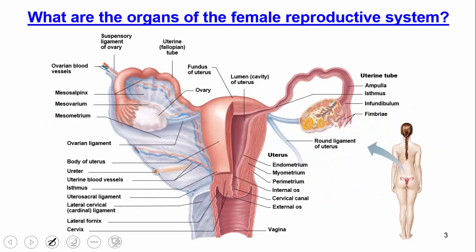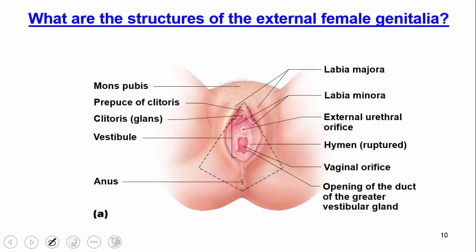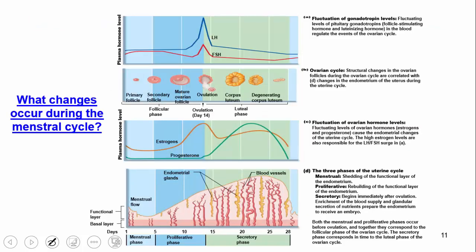We'll now look at different perspectives of the female reproductive system: an anterior view and an inferior view. Both show the same structures we discussed from the lateral view. Try to identify all the structures we talked about on the first slide in these different perspectives. Next, we'll discuss the events that happen every month during a woman's menstrual cycle — both when she does not become pregnant and when she does.